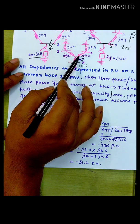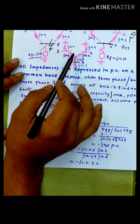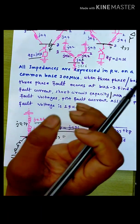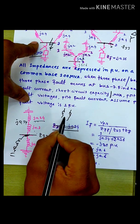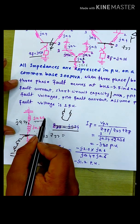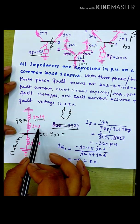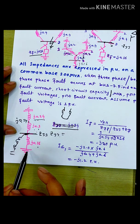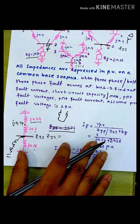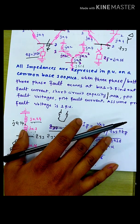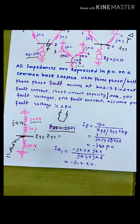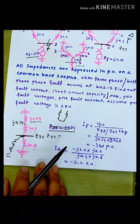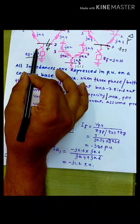A-2 reactances in series, A-2 reactances in series. A-2 reactances are parallel, three reactances are parallel, two reactances are parallel. This is the fault impedance. We have to calculate our fault impedance.